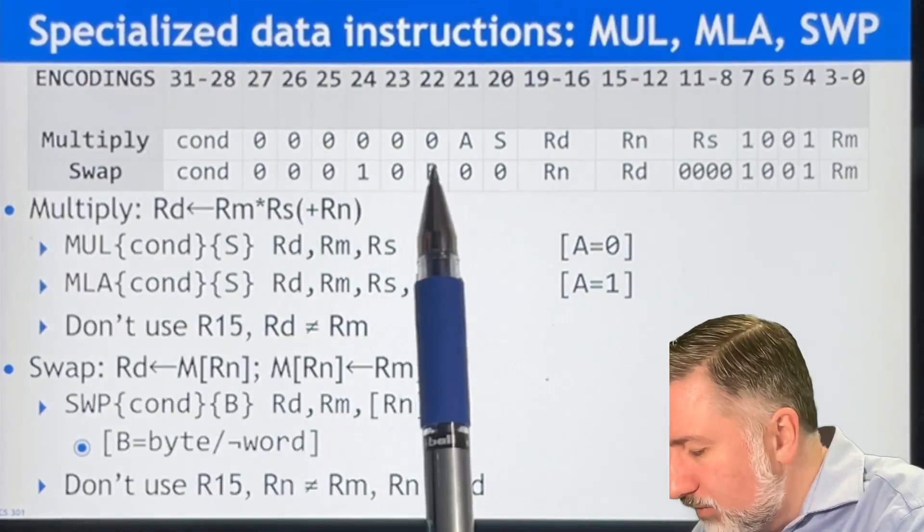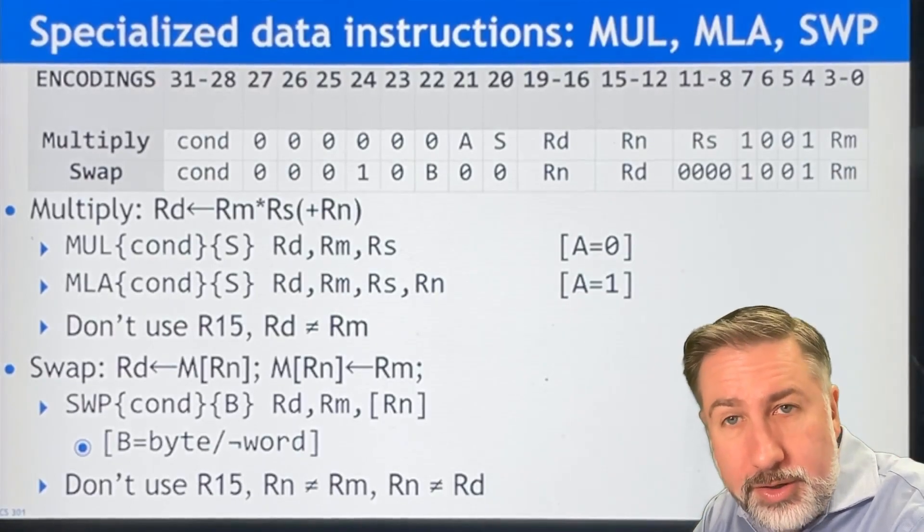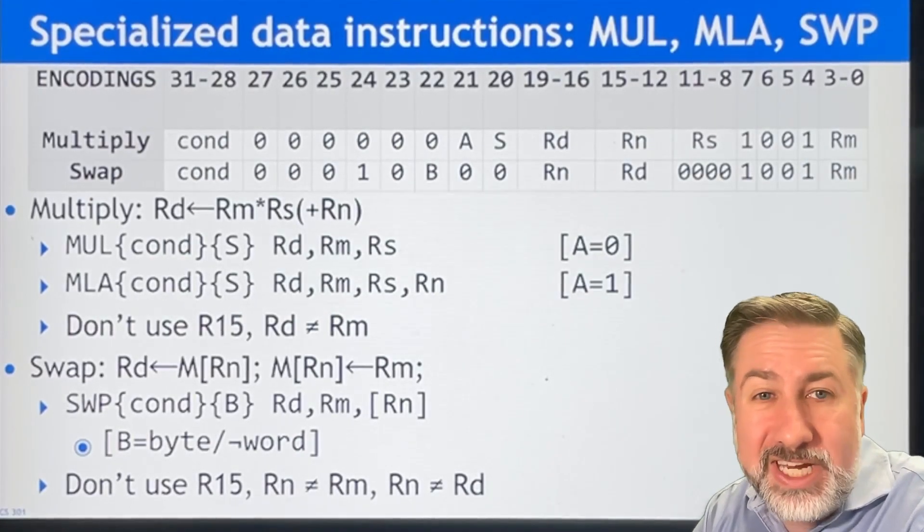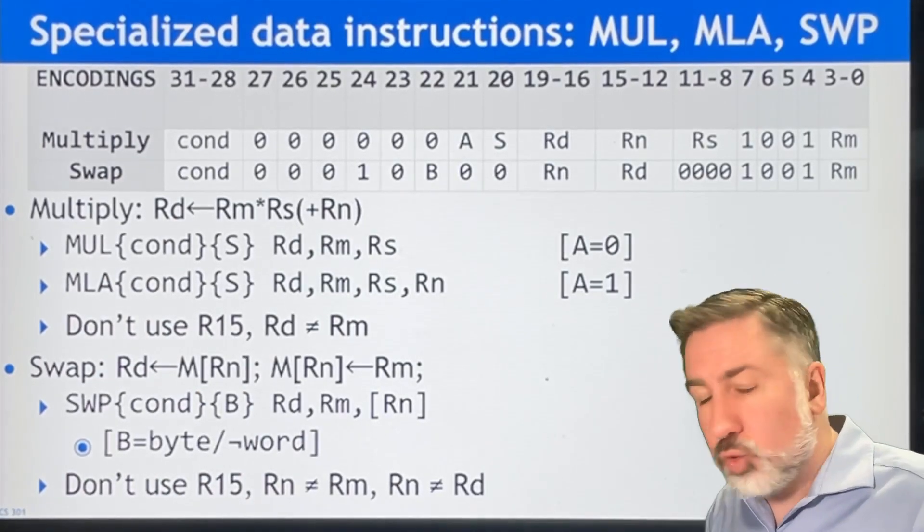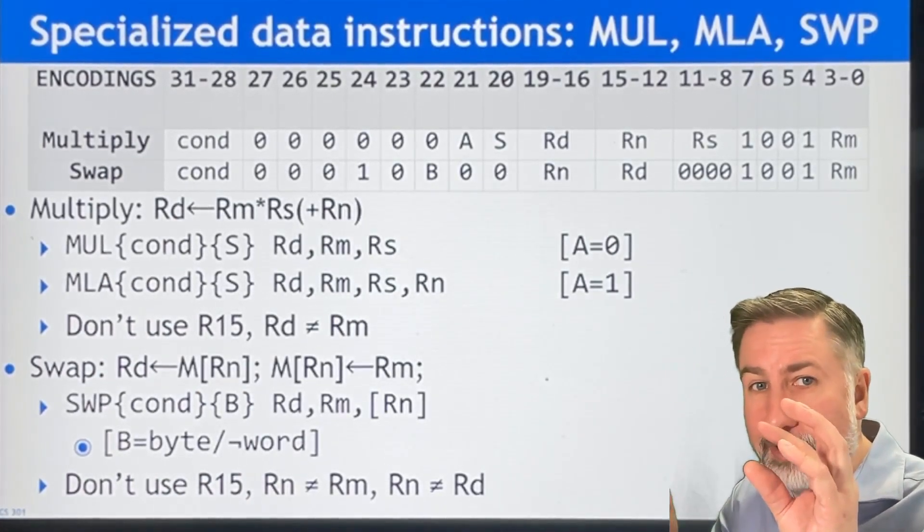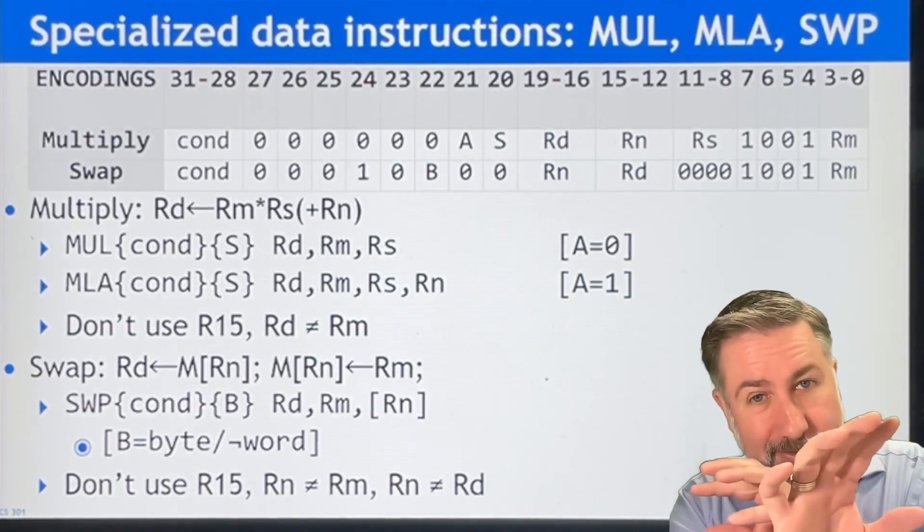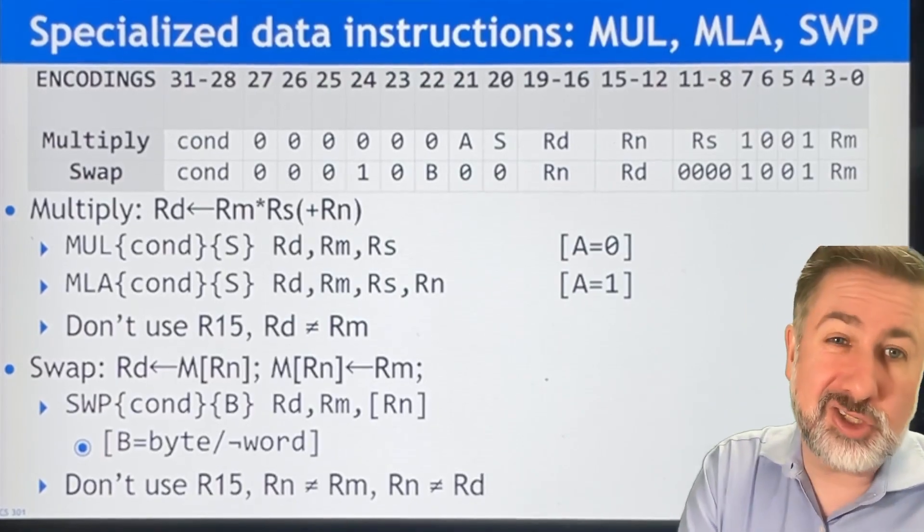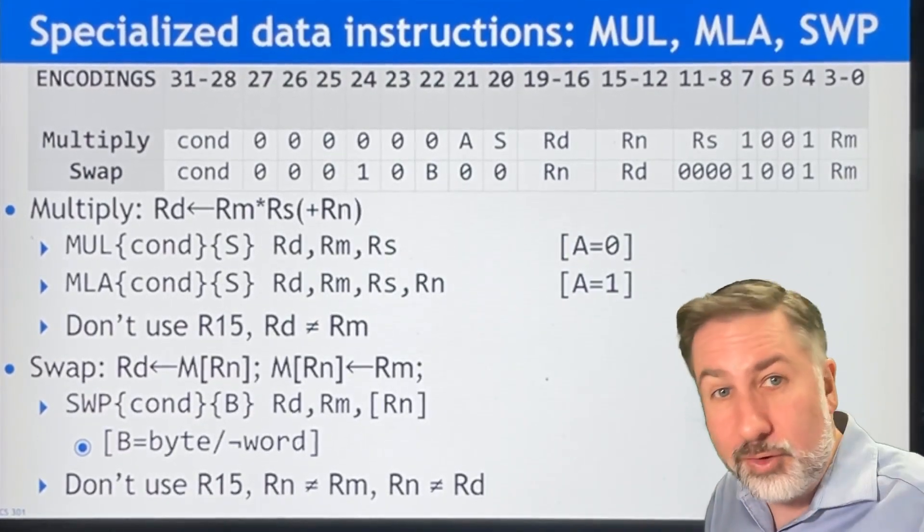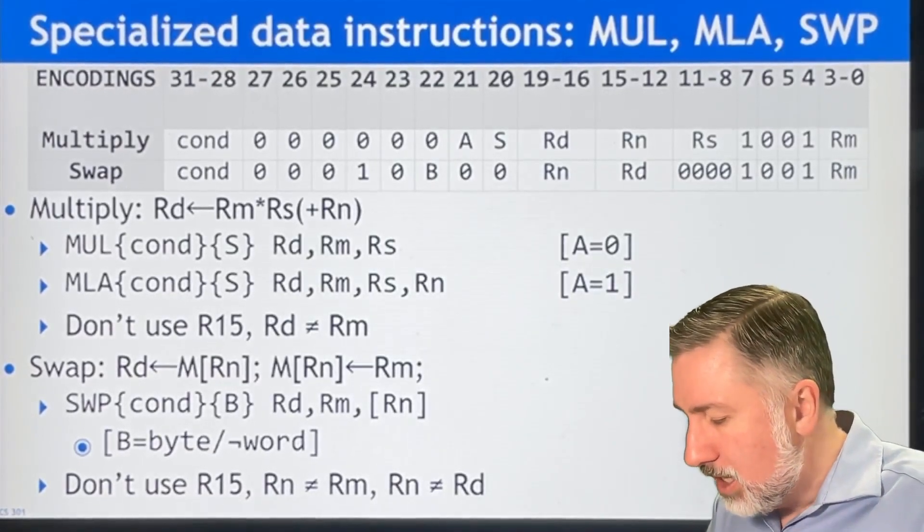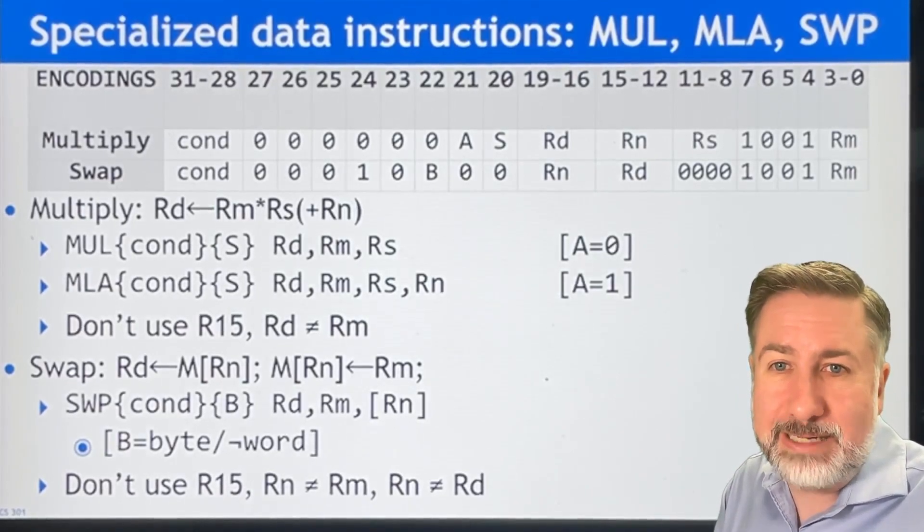Swap, same kind of idea. You have a flag called B which is whether you're swapping a byte or a word. This is used to move data back and forth from memory. Now there are load and store instructions, but a swap instruction takes a register and a memory element and copies them. So it's a load and a store together, which is a very specialized instruction. It takes extra time because you're still moving stuff back and forth through the memory tree instead of just keeping it in the CPU, but it's a very simple load-store instruction that does both at the same time.